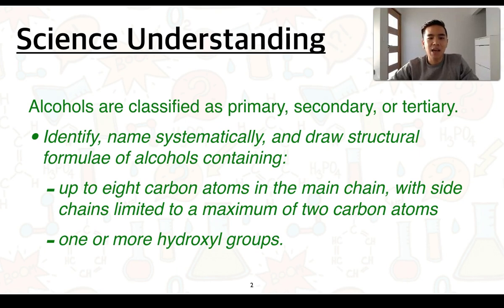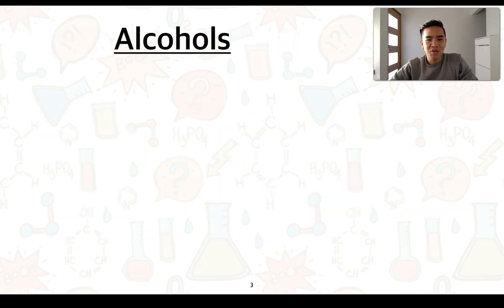This is our first science understanding. Alcohols are classified as primary, secondary or tertiary. You'll need to be able to identify, name systematically and draw structural formulae of alcohols containing up to 8 carbon atoms in the main chain with side chains limited to a maximum of 2 carbon atoms as well as one or more hydroxyl groups.